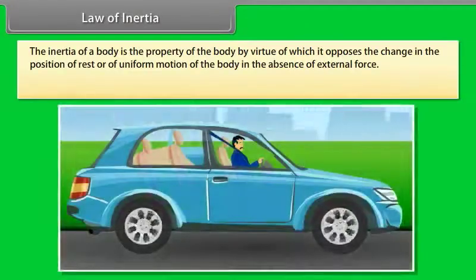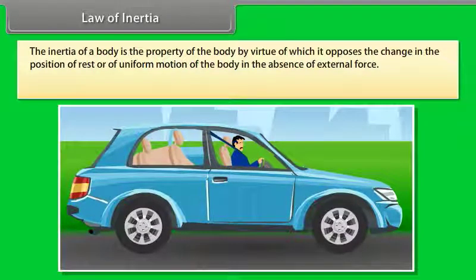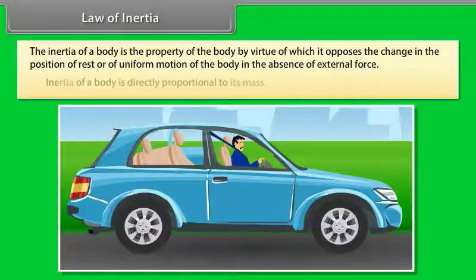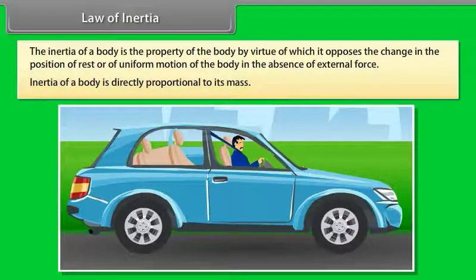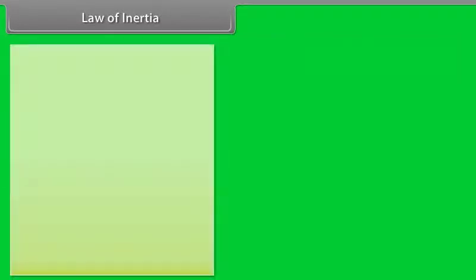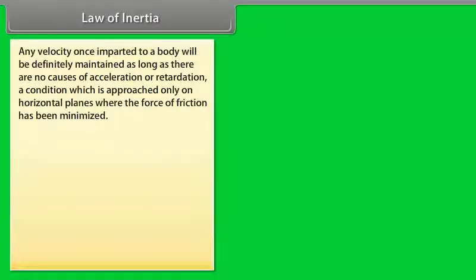The inertia of a body is the property of the body by virtue of which it opposes the change in the position of rest or of uniform motion of the body in the absence of external force. Inertia of a body is directly proportional to its mass. Any velocity once imparted to a body will be definitely maintained as long as there are no causes of acceleration or retardation, a condition which is approached only on horizontal planes where the force of friction has been minimized.